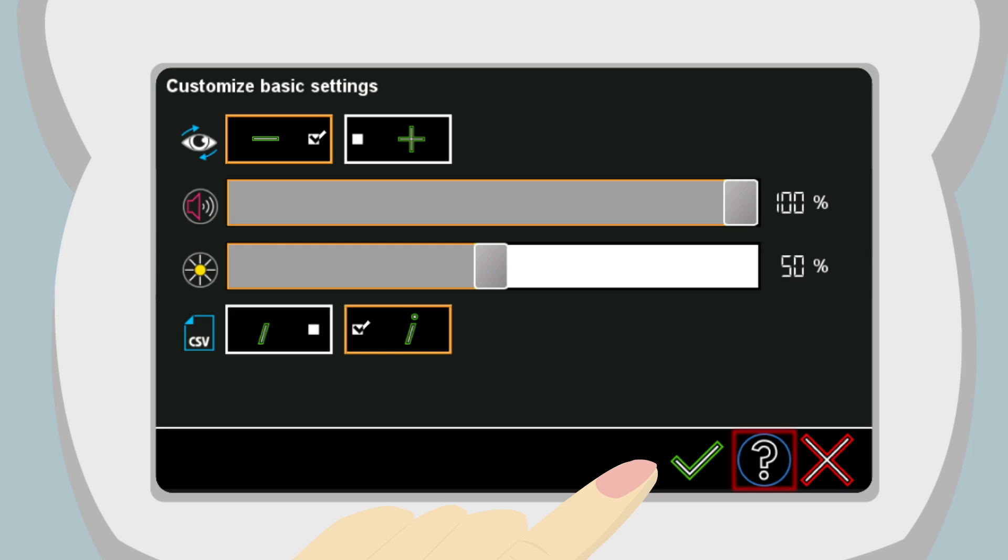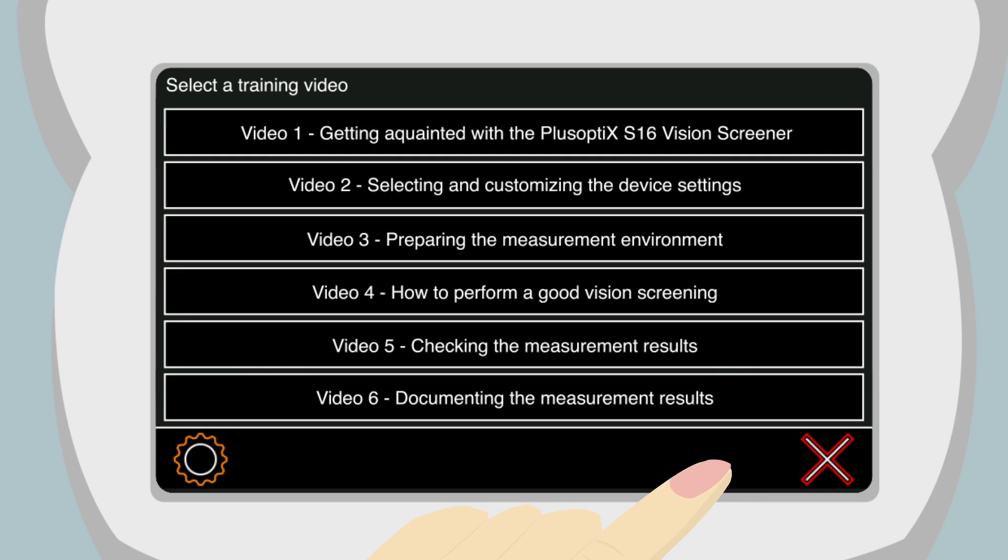Touching the Question Mark button will show a list of useful training videos. You can learn how to prepare the measurement area and how to handle the device. Please note, watching the training videos does not replace reading the user manual.